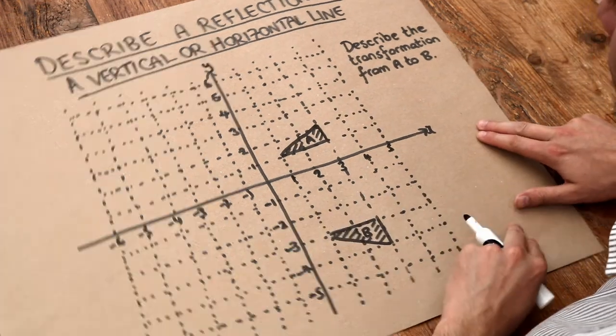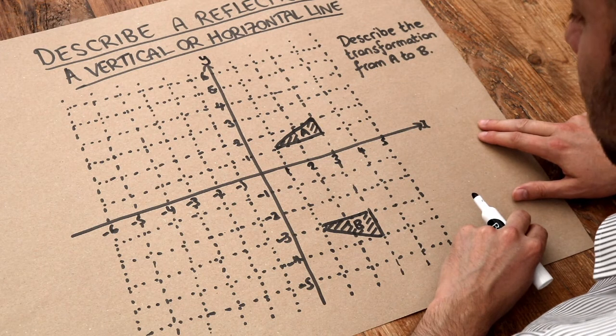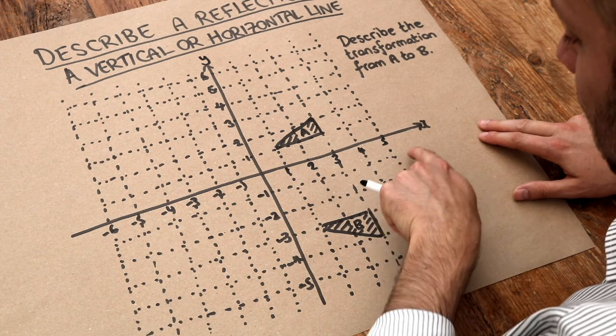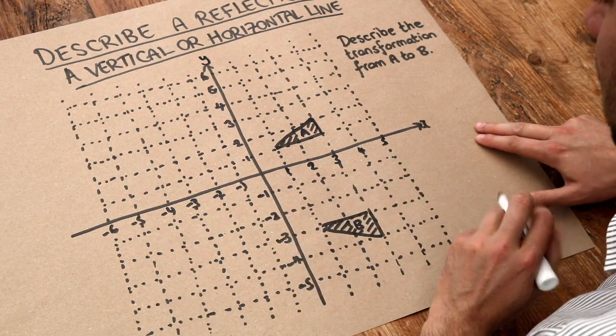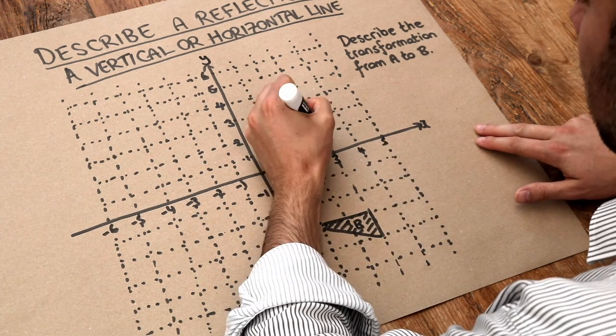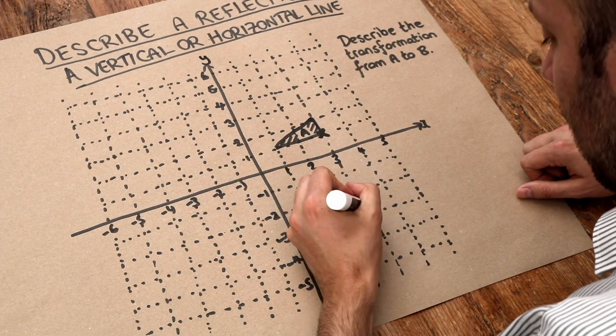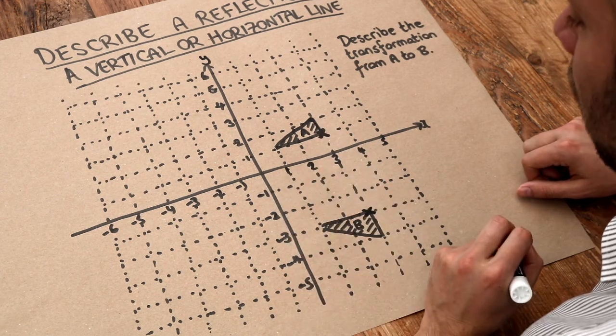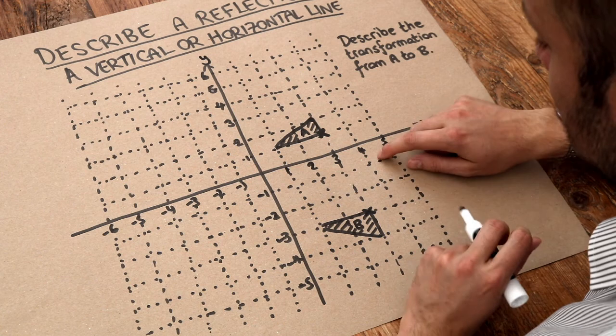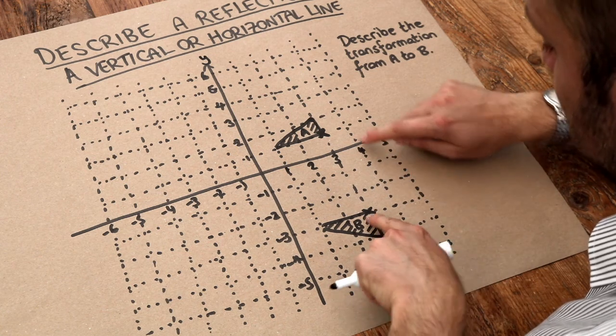The first thing we need to do is identify the line of reflection. You might be able to see it visually, but one way we can do it is to take a point on the original shape and then the equivalent point on the other shape. So this is the right angle here, this is the right angle here. And the line of reflection has to pass exactly halfway between the two points.